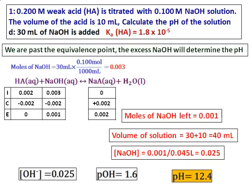You may ask why I did not consider the reaction of the salt with water, since that would give some hydroxide ions and add to the pH. But NaOH being a strong base, it dominates the presence of hydroxide ions. The amount of hydroxide from the salt is negligible compared to what comes from sodium hydroxide — that is why that calculation is not done.